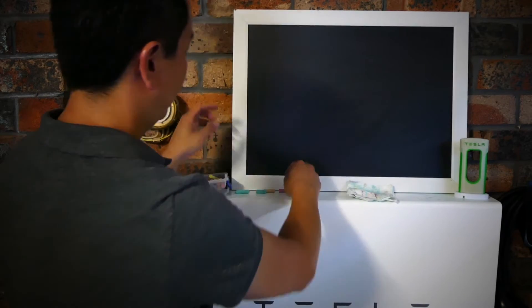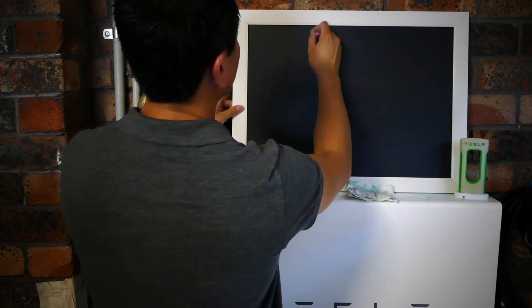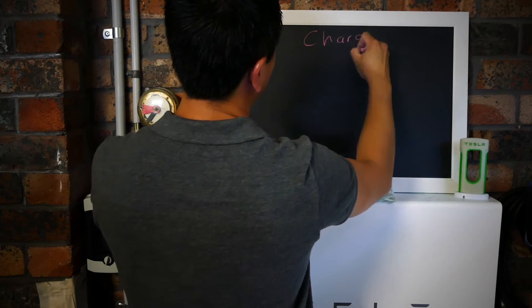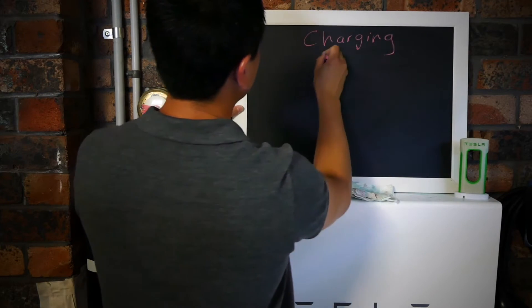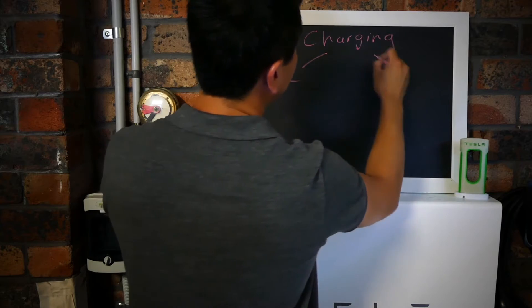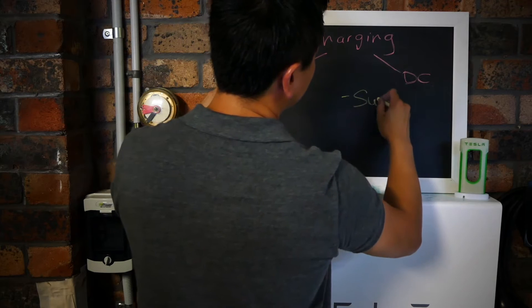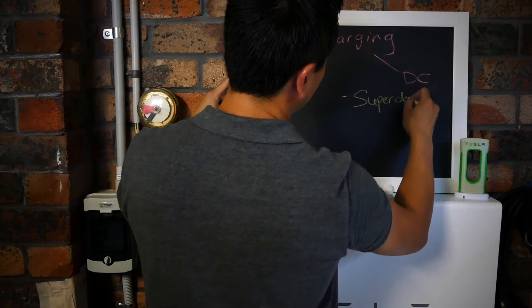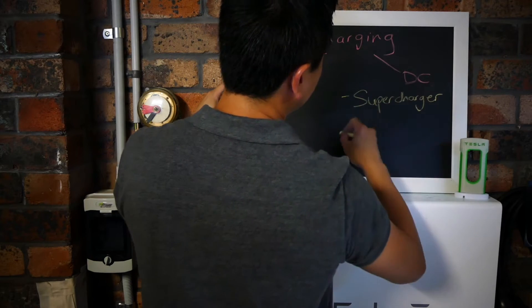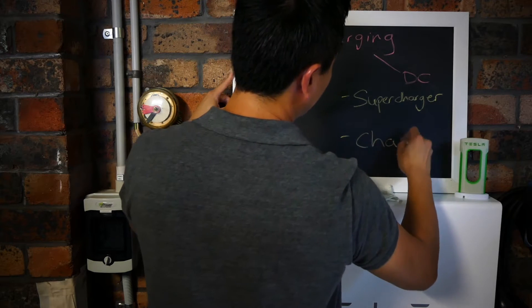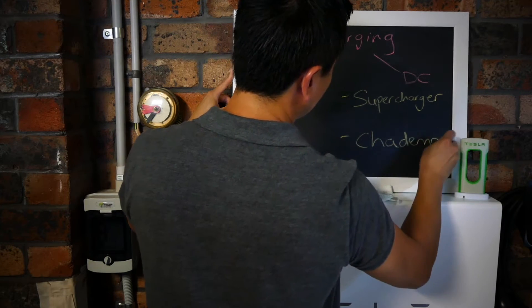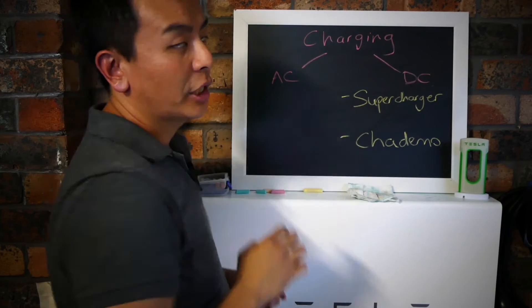Hi everyone, thanks for joining us on another Ludicrous Feed video. Today I wanted to talk about the basics of charging your Tesla. Let's get straight into it. There's two types of charging: AC and DC. With DC charging, there's essentially two types - the Supercharger and CHAdeMO.